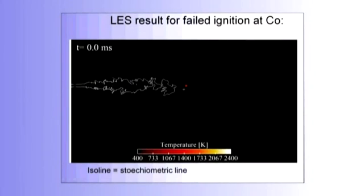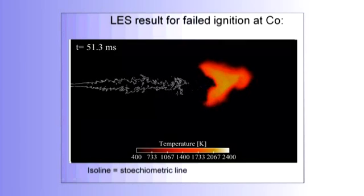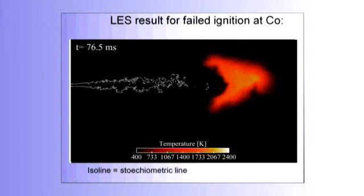Another example here where we put the spark much more downstream here. It's a bit too far downstream, as you will see. You get ignition. You see there is something igniting, but the flow is going too fast. So the flame is igniting, but it's propagating downstream.